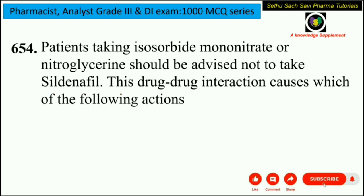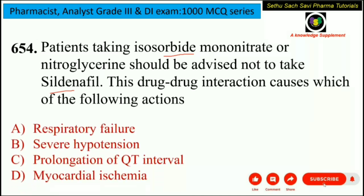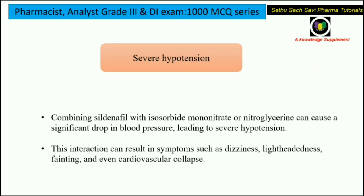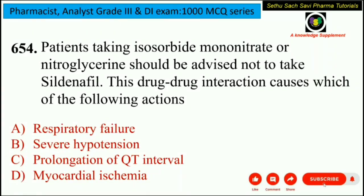Next question: patients taking isosorbide mononitrate or nitroglycerin should be advised not to take sildenafil. This drug-drug interaction causes which of the following? The options are respiratory failure, severe hypotension, prolongation of QT interval, or myocardial ischemia. The answer is severe hypotension. Combining sildenafil with isosorbide mononitrate or nitroglycerin causes a significant decrease in blood pressure, leading to severe hypotension, which can result in dizziness, light-headedness, fainting, and even cardiovascular collapse.